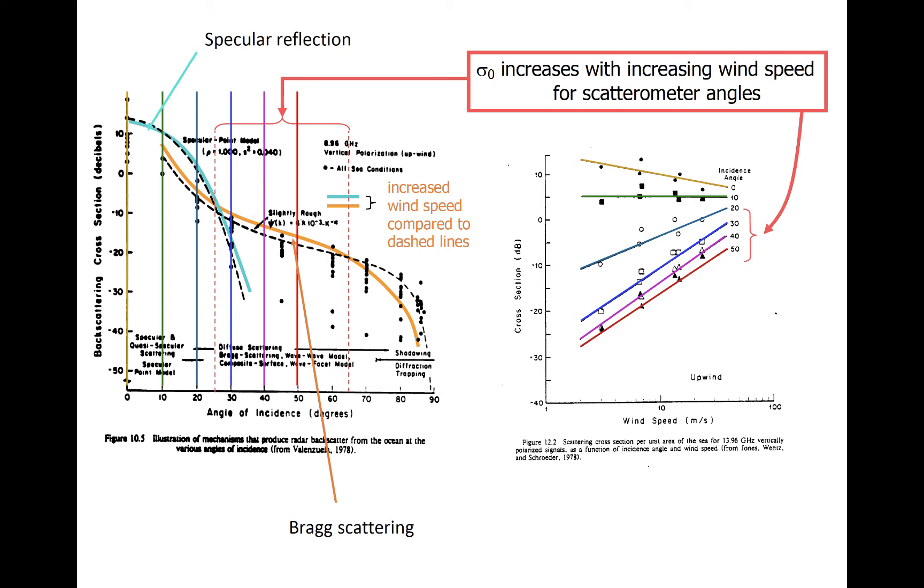This is very important, because for this reason, most scatterometers will scan off nadir in this range where Bragg scattering is prevalent, so that it is straightforward to convert power to some information about wind speed at the surface. Shadowing and refraction of radiation prevent scatterometers from operating at incidence angles much larger than 65 degrees.